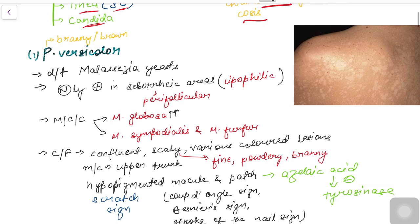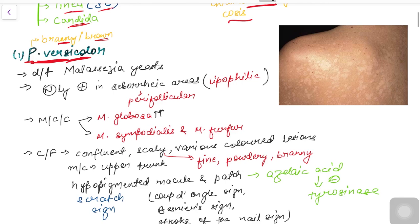Let's talk about Pityriasis versicolor. The term 'pityriasis' literally means branny or brown, related to the scales present, and 'versicolor' means various colors of the lesions. So the name of the disease explains everything about it. It is caused by Malassezia yeasts, which are normally present on the skin in sebaceous areas. It is a lipophilic fungus — it loves lipids — and since sebum is maximum in the perifollicular area, the lesions are perifollicular.